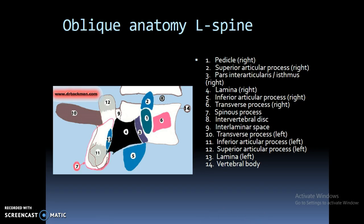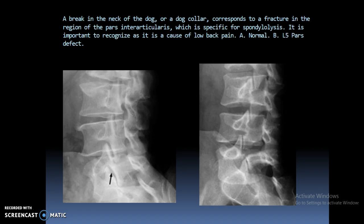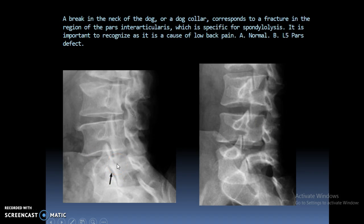The Scotty dog is made up of all the different anatomical parts: the transverse process forms the nose, the pedicle is the eye, the inferior articular process is the front foot, the other articular process on the opposite side creates the other lower leg, and the superior articular process makes up the ear. On the oblique image you can see the little Scotty dog with its head, nose, front foot, body, and tail. We're looking for pars fractures through the neck of the dog — if there is a dark line through that area, you can assume there is a fracture.